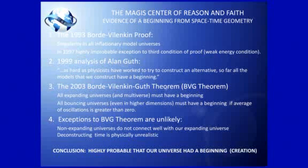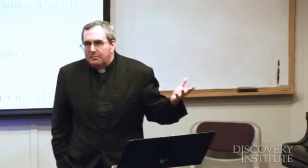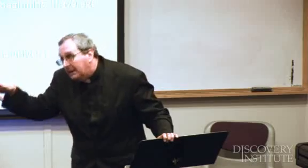I want you to recognize three big space-time geometry arguments. The first was put together by Arvind Borda and Alexander Vilenkin in 1993. That argument is still valid today — there is an exception for weak energy conditions, but even Alan Guth said the weak energy condition problem is so minimally probable that he does not consider it a problem. They elucidated five conditions in an inflationary model universe — which our universe is — and showed that that inflationary model universe would have to have a singularity. In 1997, they discovered a minimally probable possibility of weak energy conditions being violated, but it didn't seem applicable to any universe even remotely resembling our own. That's still valid today.